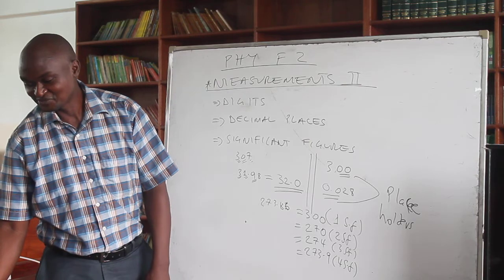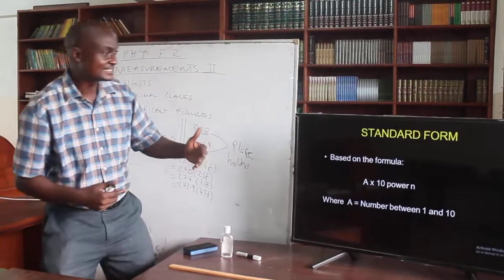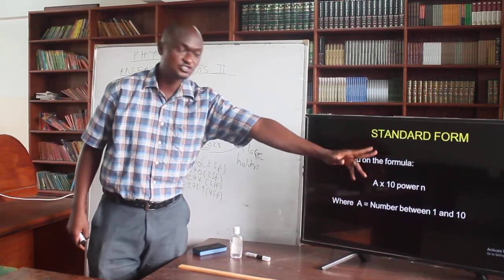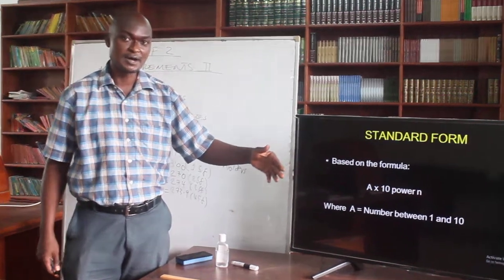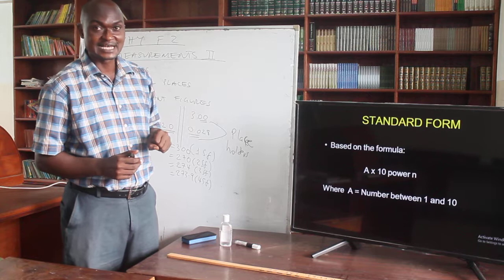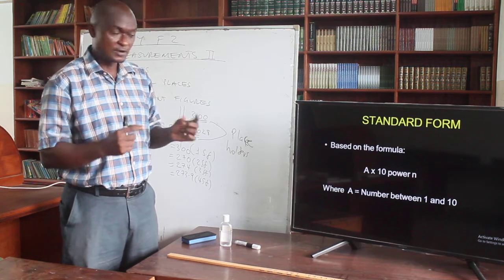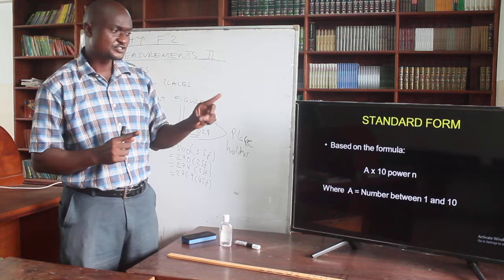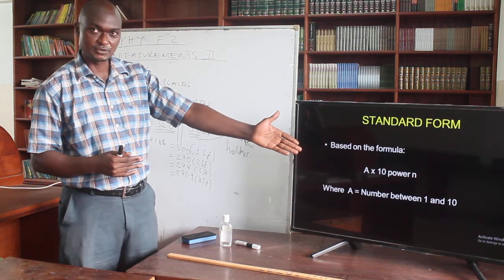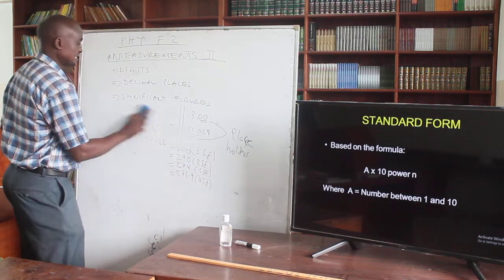That's the third computation: significant figures. Now the next one — standard form. How would we deal with numbers? How would we get numbers in standard form? They are based on this formula: A times 10 raised to power n, where A is a number which is 1 or more than 1 but less than 10, while n is any integer. So figures and data collected in physics can also be expressed in standard form. This is mostly true if the figure is too large or too small — it is written in standard form, which is this particular format. Examples will help us understand this.